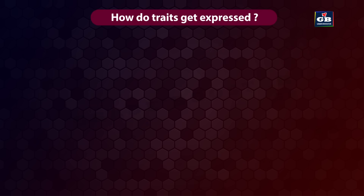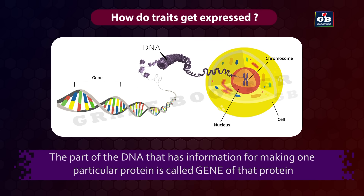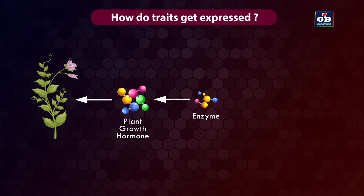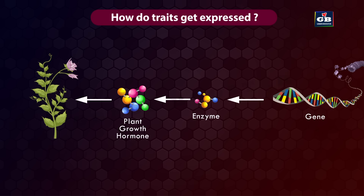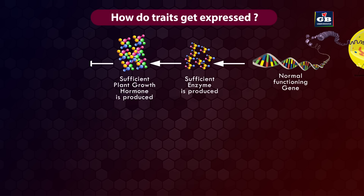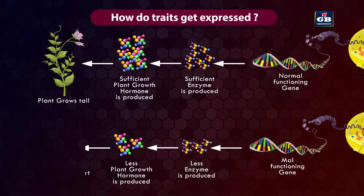Cells have DNA in the nucleus, which is the information source for making proteins. The part of DNA that has information for making one particular protein is called the gene for that protein. For example, plant growth is affected by a plant growth hormone, and for its proper production an enzyme (a protein) is required — its production is controlled by a gene in the DNA. If the gene is proper, sufficient growth hormone is produced and the plant will be tall; if the gene is altered, less enzyme and less growth hormone are produced, making the plant short.